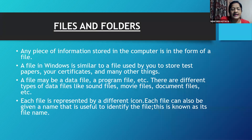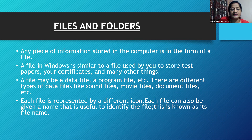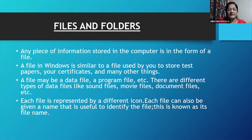Any piece of information stored in the computer is in the form of a file. A file in Windows is similar to a file used by you to store test papers, certificates, and many other things. A file may be a data file, a program file, etc. There are different types of data files, like sound files, movie files, document files, etc. Each file is represented by a different icon. Each file can also be given a name to identify it, known as its file name.